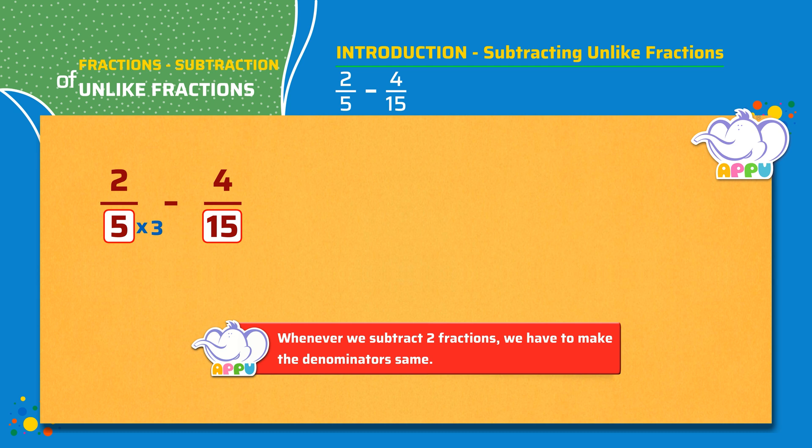Since we multiply the denominator with 3, we will also have to multiply the numerator with 3, which is 2 times 3, which equals 6.